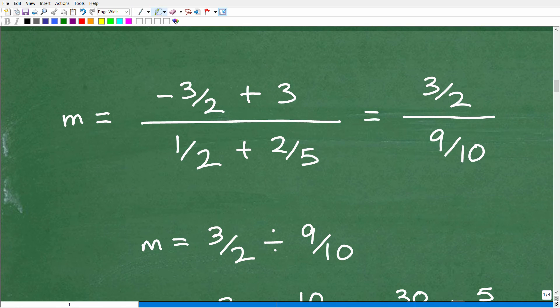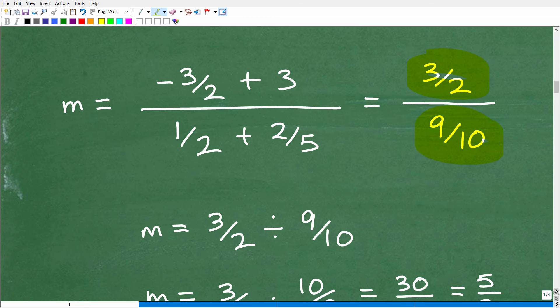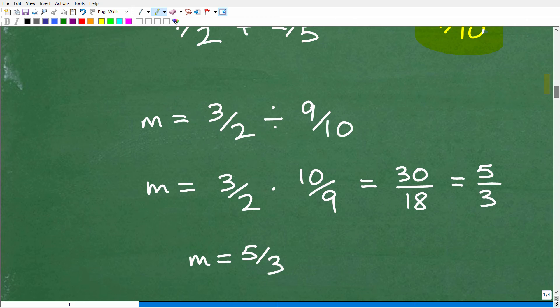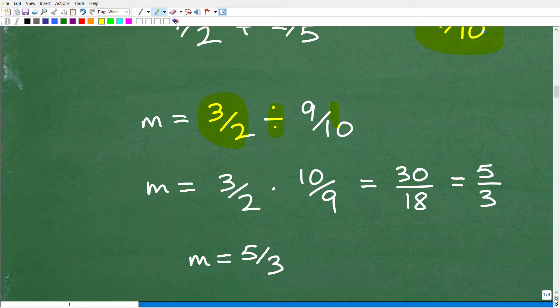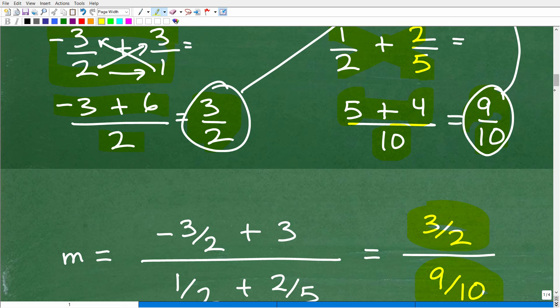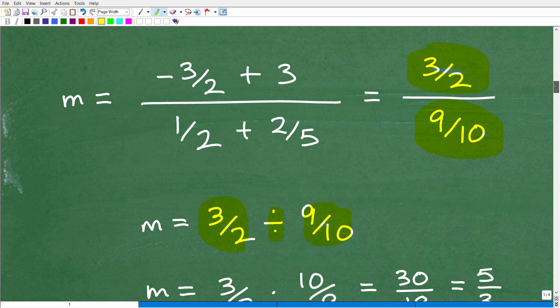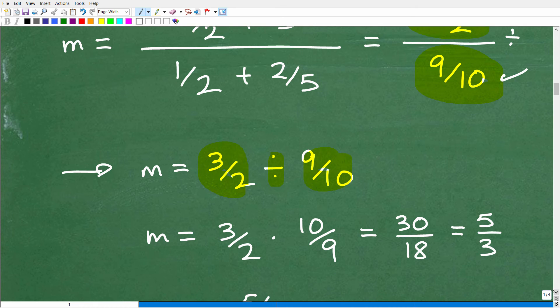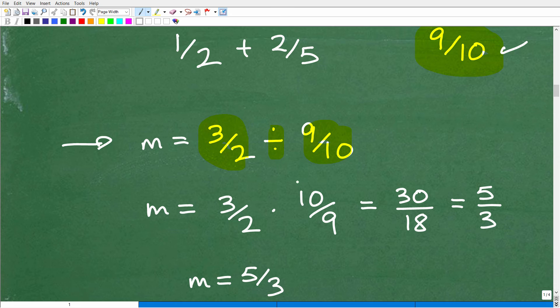Okay, so we need to put in our 3 halves for our numerator and 9 tenths as our denominator. And so that looks like this. We have 3 halves now and 9 tenths. And now this is a complex fraction. We have 3 halves divided by 9 tenths. So let's go ahead and write it this way. This is 3 halves divided by 9 tenths. That's what this fraction means. All right, so we have 3 halves divided by 9 tenths.